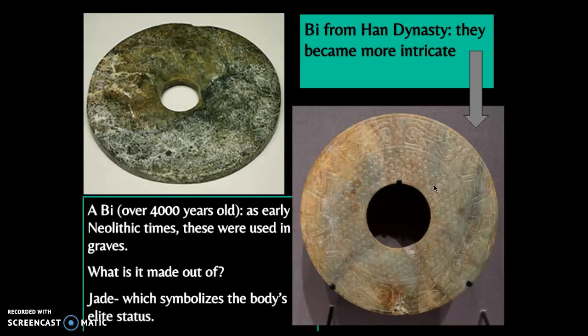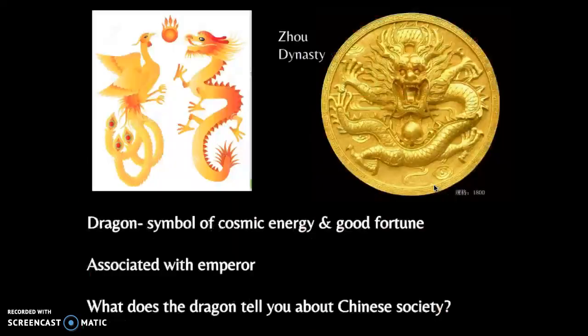Another important symbol in art is the dragon. The dragon was a symbol of cosmic energy and also good fortune, and it started to become associated — even as early as the Zhou dynasty — with the Emperor. His wife was then portrayed as a phoenix, a mystical bird that rose from the ashes. Think about what we've discussed about Chinese society and what the dragon might represent, and whether we can make any Confucian connections.